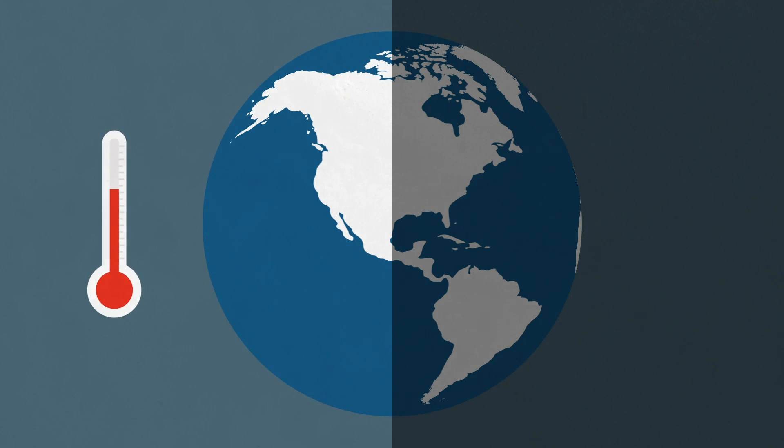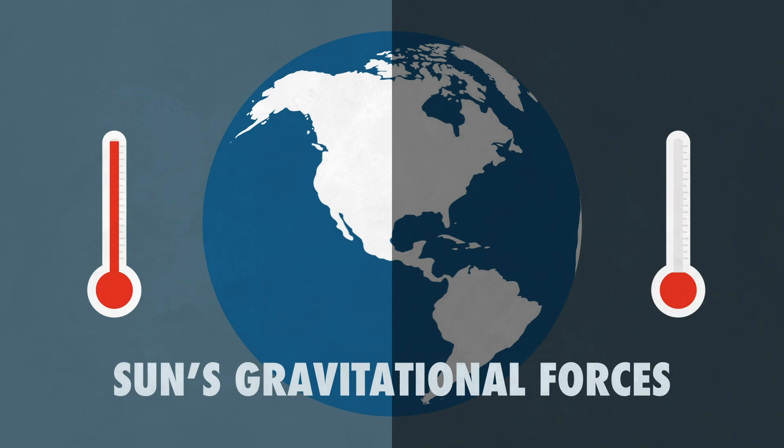The temperatures on the side facing the sun would be much hotter than our current equator, and the side facing away from the sun would be extremely cold due to the lack of light. This isn't a completely stopped rotation, but due to the sun's gravitational forces, it would be as close to stopping as the laws of physics would actually allow.